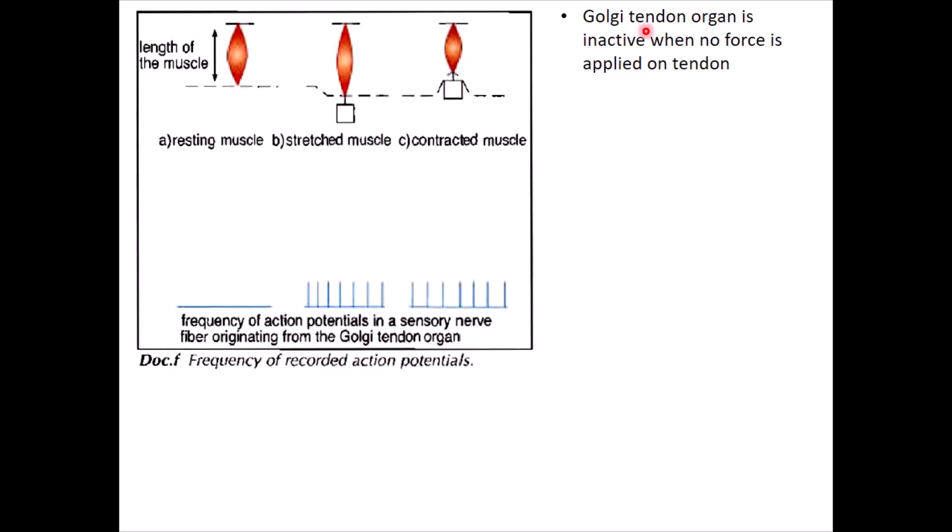So this means that the Golgi tendon organ is inactive when no force is applied on the tendon like in the first case. But it is active during stretching when the muscle is being pulled through its tendon. Or contraction when the muscle is pulling something through its tendon. This actually relates to something you studied in physics. Remember that in a string or a rope attached to a certain weight or object, opposite to the weight of the object is another tension force which is present inside the tendon or in the string. In this case, it's the tendon. So this is the tension force inside of the string. And this is what is being felt by the Golgi tendon organ.